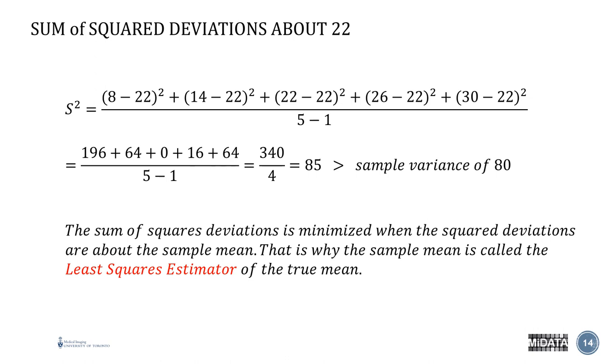Now here's an interesting observation. What if when we did the least squares calculations, instead of using the mean, which was 20, we used 22? Well, when you calculate your sample variance, you'll notice that it will always be greater than if you had used the sample mean in the calculation. And so, the sum of squares deviations is minimized when the square deviations are about the sample mean. And it's for this reason that we call the sample mean the least squares estimator. And this will come in handy when we start talking about regression. More on that in future lectures.